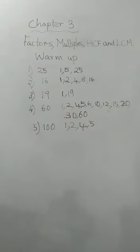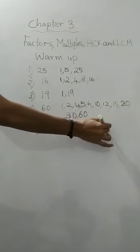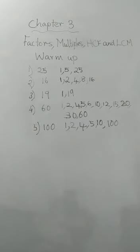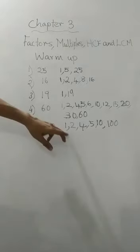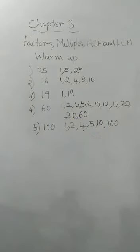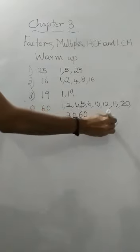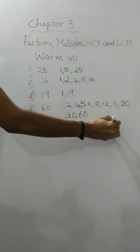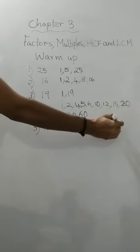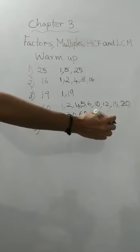5 also. Why? Last number is 0, and 0 or 5 means 5 will be a factor. Then 6, 7, no. 8, 9, 10, yes, 10 can be a factor. After 10, there will be 20. 20 into 5 is 100, right? Then you can't do 30, 40. 25 is there.